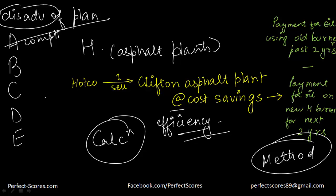Option B says the plant's need for more than one new burner. That does not matter because HotCo is selling only one, and only for that one burner are we talking about cost savings. So B is gone. Option C says very poor efficiency in the plant's old burner. That is already known — the old burner was not efficient, which is precisely why HotCo can confidently demand the difference between the two oil payments. So C is gone.